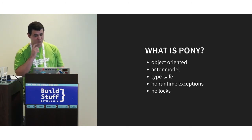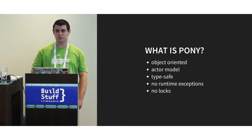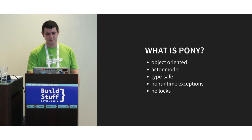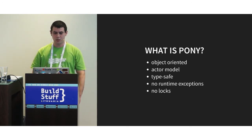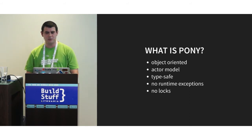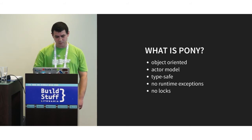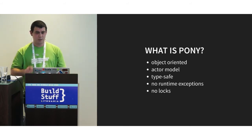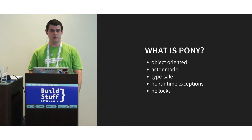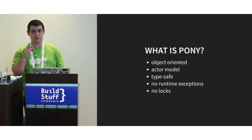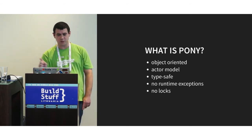What is Pony? It's object-oriented — it has classes, interfaces, and traits. Everything is an object. There are no nulls and no pointer arithmetic. It's an actor model, using actors for running code asynchronously. It's statically typed, and the type system has many features that help write safe code. There are no runtime exceptions — every error has defined semantics and the compiler ensures each error is properly handled. If you wrap code in a try expression that doesn't throw an error, the compiler will also complain about that.